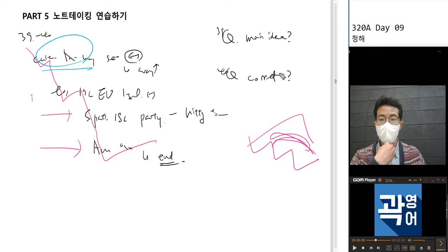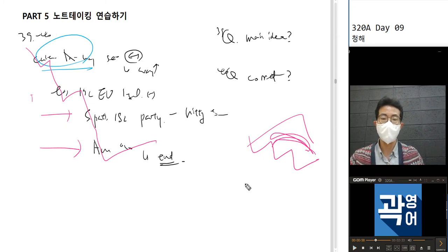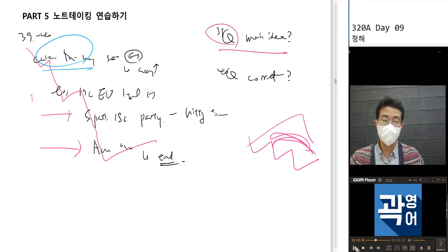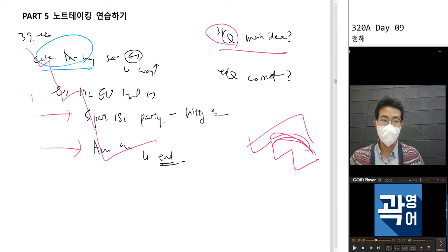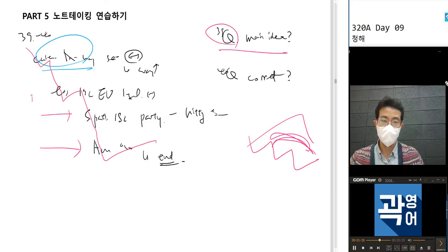토플이나 IELTS와 비교해서 봤을 때 탭스는 굉장히 짧은 거죠. 6분짜리 비교하면 얘는 1번 정도밖에 안 되니까. 그래서 39번 정답을 어떻게 찾았을까? 문제를 보면: 'even minor disputes, different routes, yes, but all to reach the same end.'